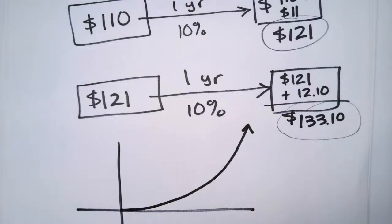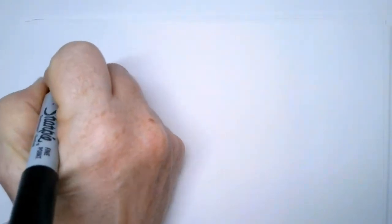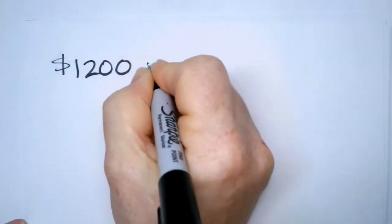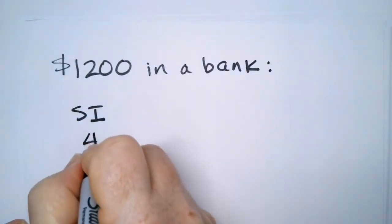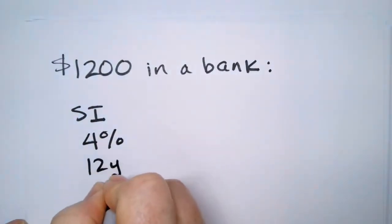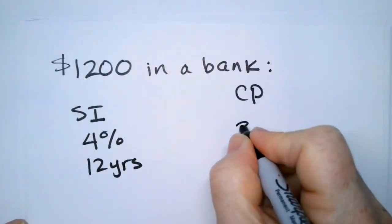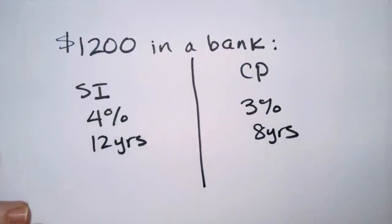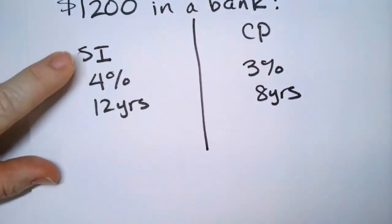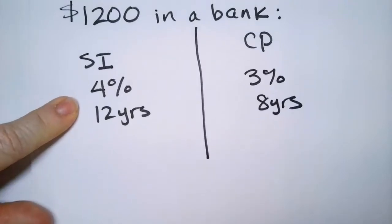Let's talk about comparing interest rates. Would you rather deposit $1,200 in a bank that has simple interest of 4% for 12 years or compound interest of 3% for 8 years? I know I haven't showed you how to do compound interest calculations. I will. Let's do the simple interest because we know how to do that.